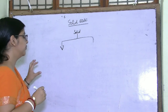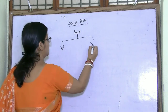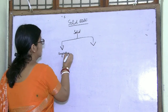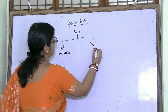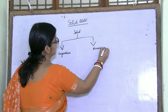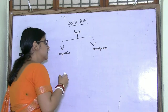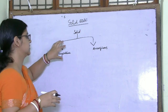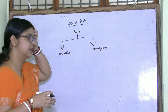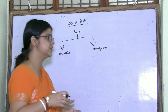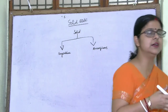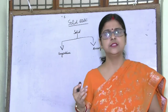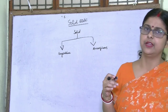Solid is broadly classified into two. One is crystalline solid, another is amorphous solid. In crystalline solid, the particles are regularly arranged to give a definite pattern.